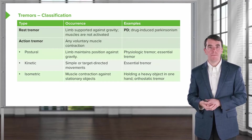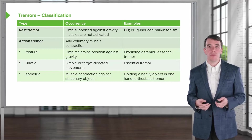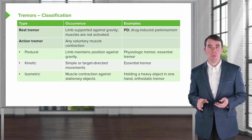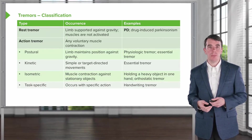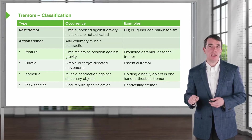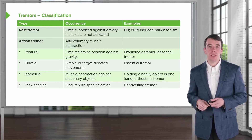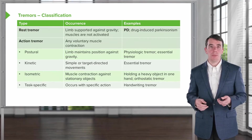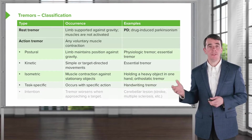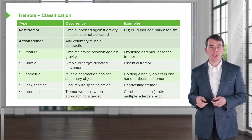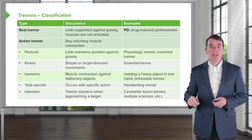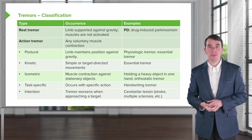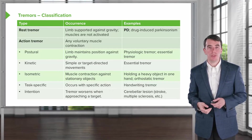Isometric tremor is a rare action tremor occurring with muscle contraction against a stationary object, seen in orthostatic tremor, which is extremely rare. Task-specific tremors occur only with a specific action — for example, a tremor that appears with prolonged handwriting, which is a dystonic or task-specific tremor. Finally, intention tremor worsens as the limb approaches a target and is associated with cerebellar lesions such as multiple sclerosis or cerebellar strokes.